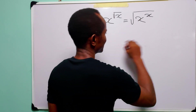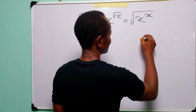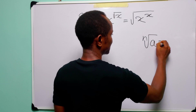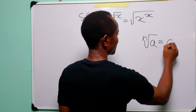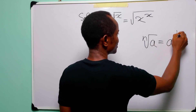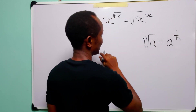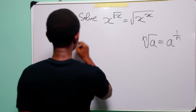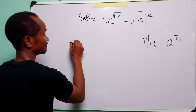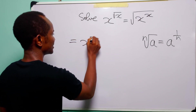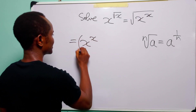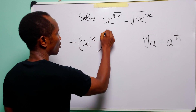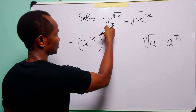We know that when we have the nth root of a, this is equal to a to the power 1 over n. So this can be written as x to the power x to the power 1 over 2.